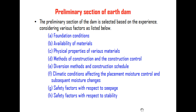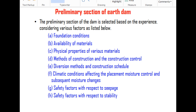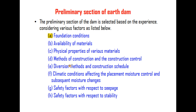The preliminary sections of the dam are selected based on experience by considering various factors. The first one is foundation condition. The next one is availability of materials. Another factor is the physical properties of various materials, which also influences the section selected for an earth dam.